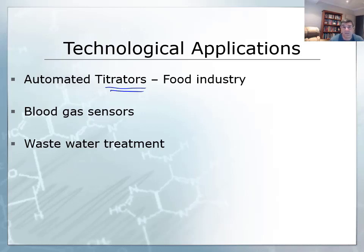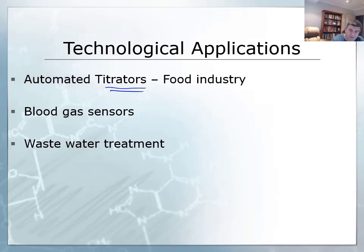Some of these devices are used in the food industry. We also have improvements in the quality of technology associated with blood sampling and blood testing, including gas sensors. The two main gases of interest here are carbon dioxide and oxygen.